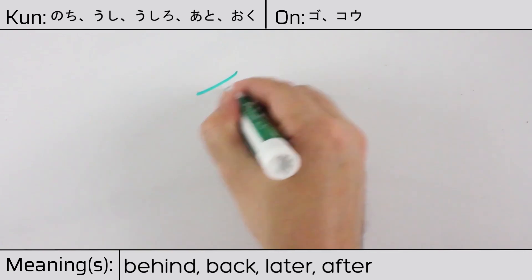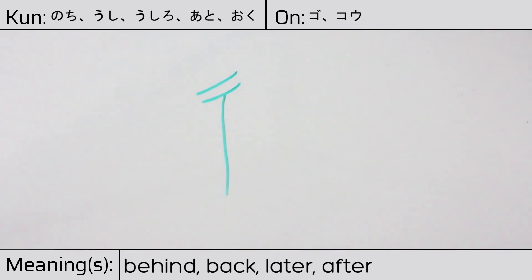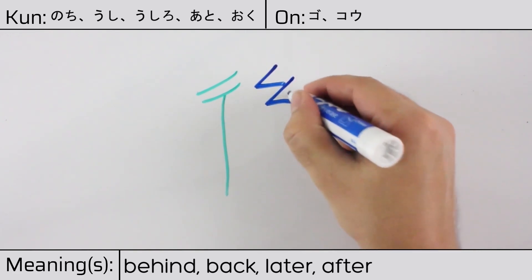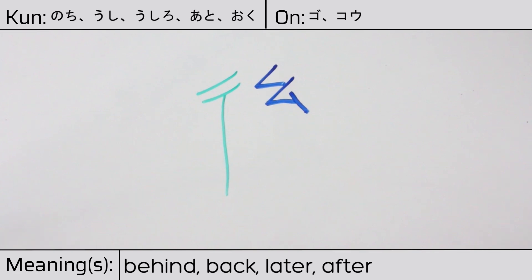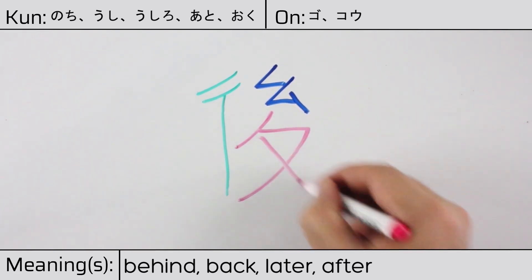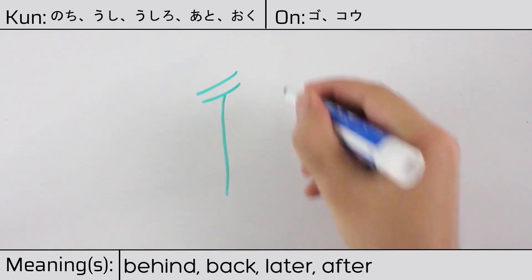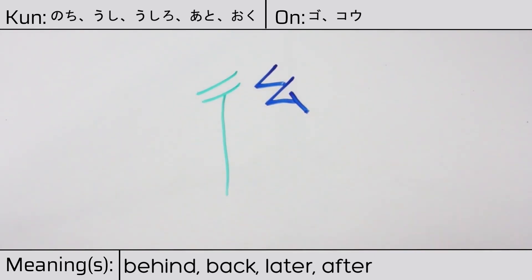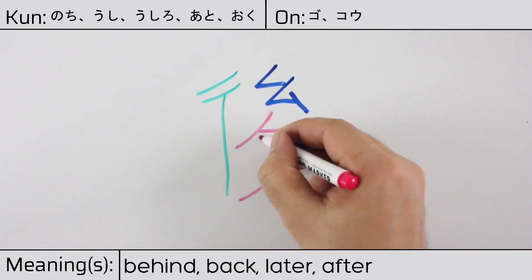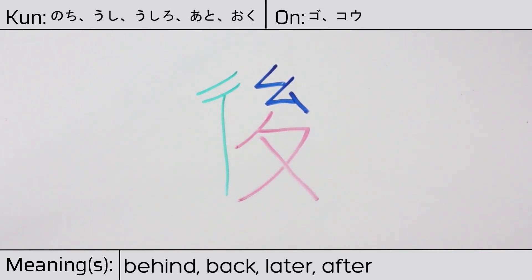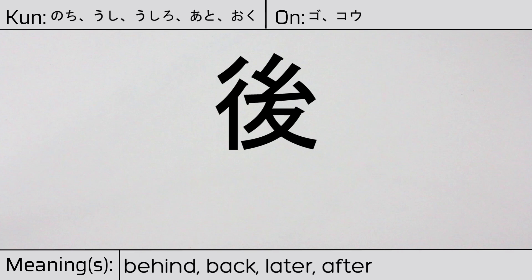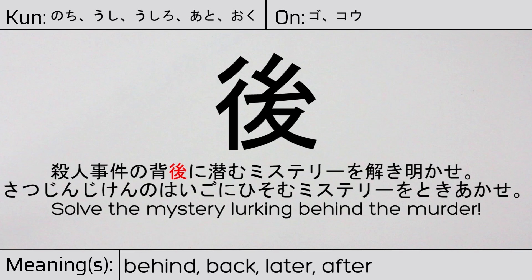This character is made up of the following radicals or parts: gioninben on the left meaning step, stride, street, or to go; followed by itogashira meaning young or slight; and finally nomata at the bottom. You can remember this kanji by the following hint: walking with a thread in the hand, it trails behind. Our example sentence is: 殺人事件の背後に、ひっそむミステリーを解き明かせ — Solve the mystery lurking behind the murder.